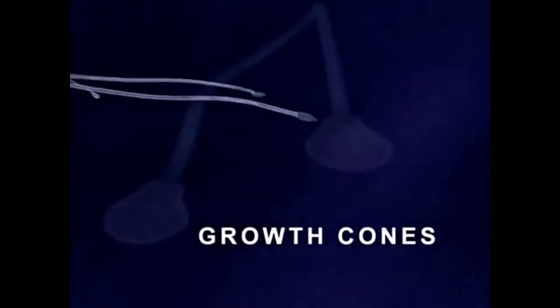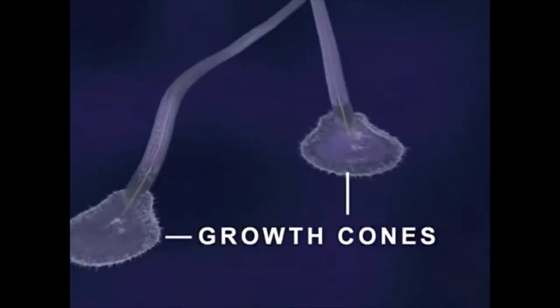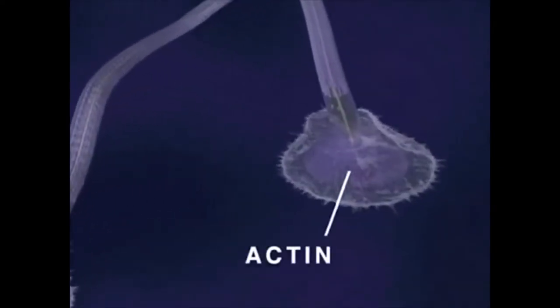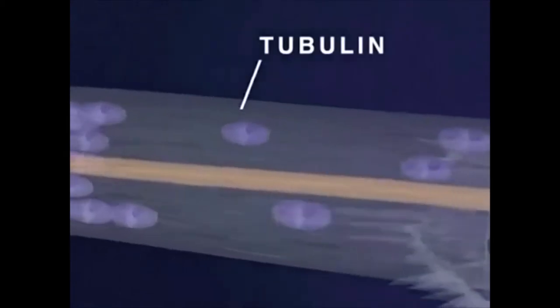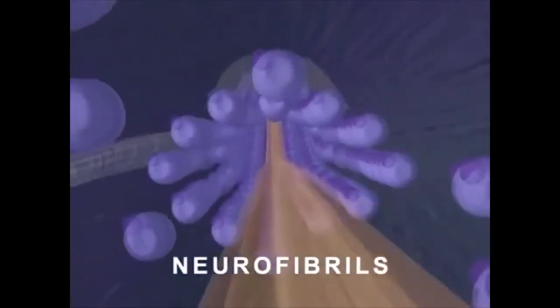At the end of each neurite is a growth cone where structural proteins are assembled to form the cell membrane. Two principal proteins involved in growth cone function are actin, which is responsible for the pulsating motion seen here, and tubulin, a major structural component of the neurite membrane. During normal cell growth, tubulin molecules link together end to end to form microtubules which surround neural fibrils, another structural protein component of the neuronal axon.